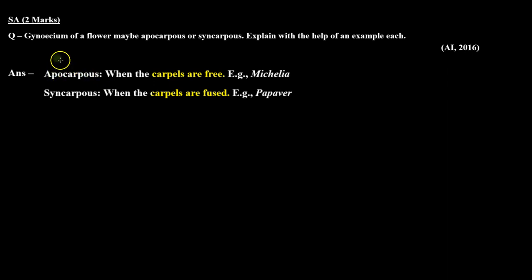Let's check the answer. Apocarpous gynosiums are when the carpels are free, for example Michelia. Syncarpous gynosiums are when the carpels are fused,